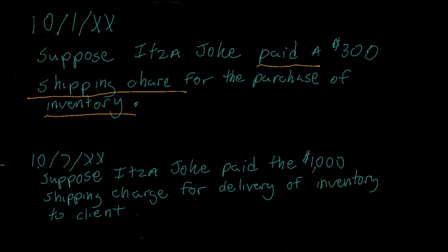And we know the rule: anytime freight in occurs, it has to be included in the cost of inventory. So how will we journalize this transaction? Obviously, we're going to debit inventory for the $300 and credit cash. Keyword: paid. Anytime you see the word paid, you always credit cash.